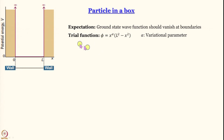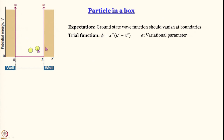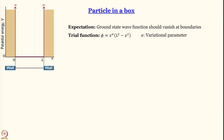We use an algebraic function: x^α · (L² - x²), where alpha is the variational parameter. Does it satisfy the boundary conditions? At x = 0, x^α = 0, so the wave function is 0. At x = L, L² - x² = 0, so again the wave function is 0. Is it symmetric with respect to L/2? x^α is an increasing function, L² - x² is a decreasing function — the product goes through a maximum at L/2. Both conditions are met, and we have a trial wave function with a variational parameter.